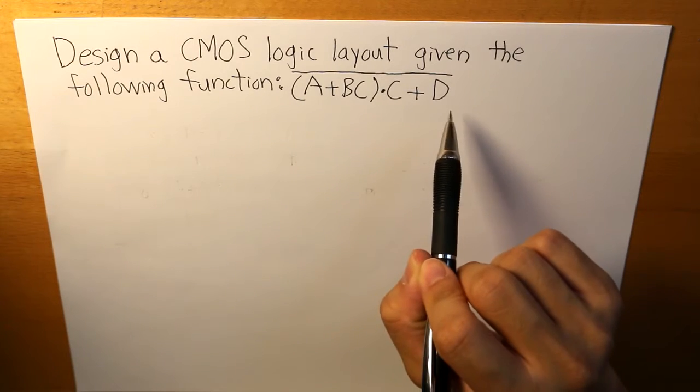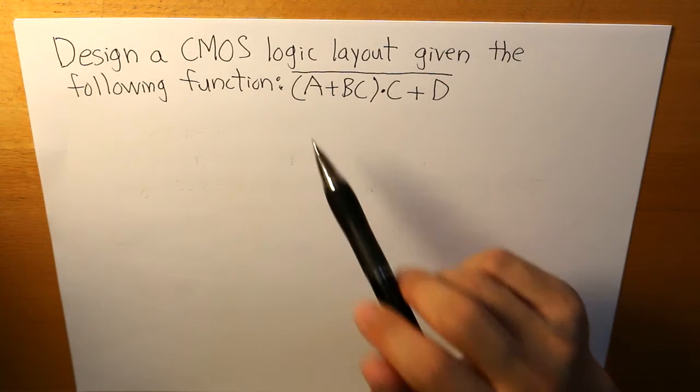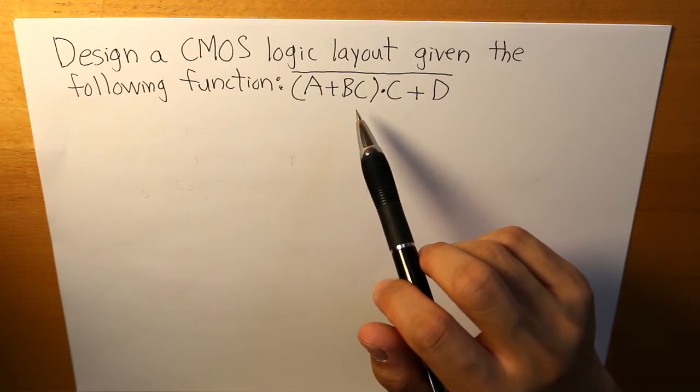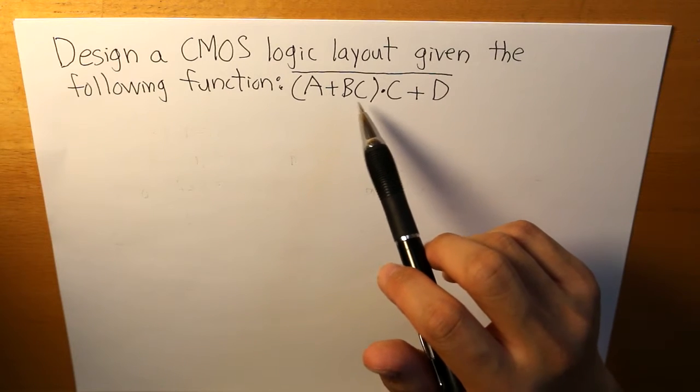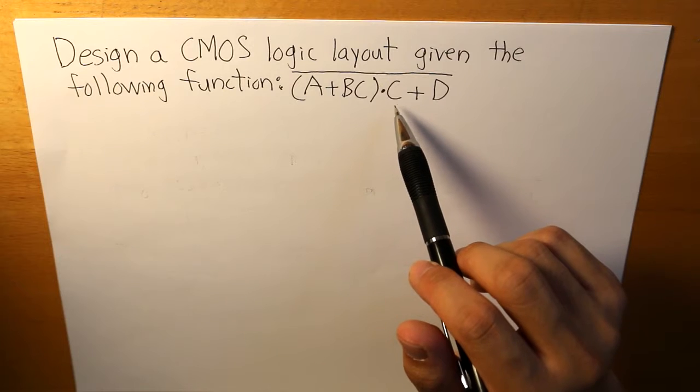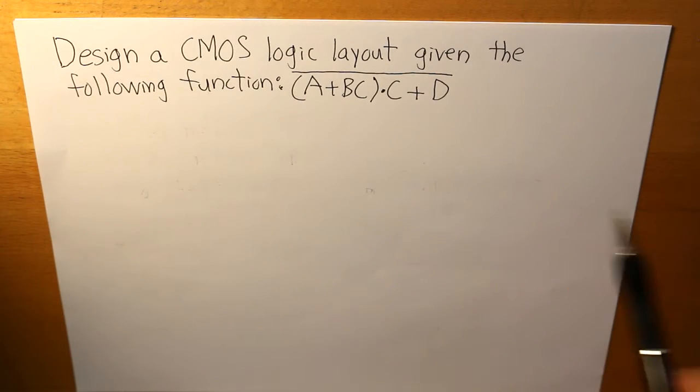And the function is as follows, where we have A is in parallel with B and C, and B and C is in series, and altogether of this, this whole thing will be in series in C, and this whole thing would be in parallel with D.